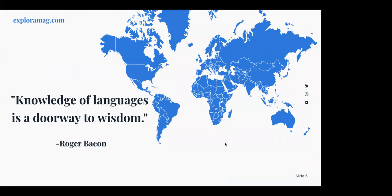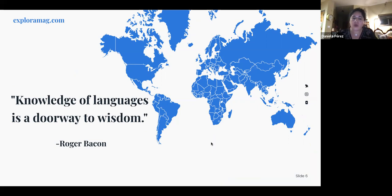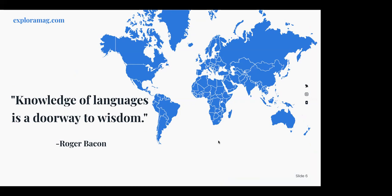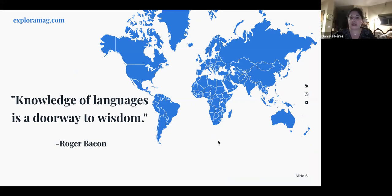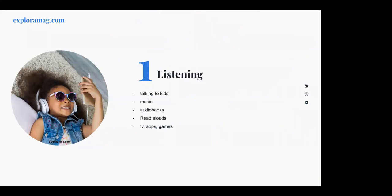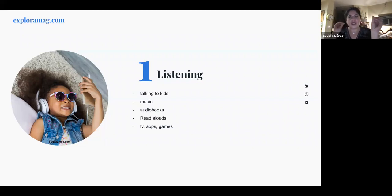A quote: 'Knowledge of languages is a doorway to wisdom.' Some of you mentioned kids are already learning a third language — that's great. But we also need to think: do we want proficiency in the second language, or just knowledge of it? Now, how do we acquire language? Most of what we acquire comes from listening. According to the latest research on the brain, a one-month-old baby already starts acquiring language — especially the sounds.